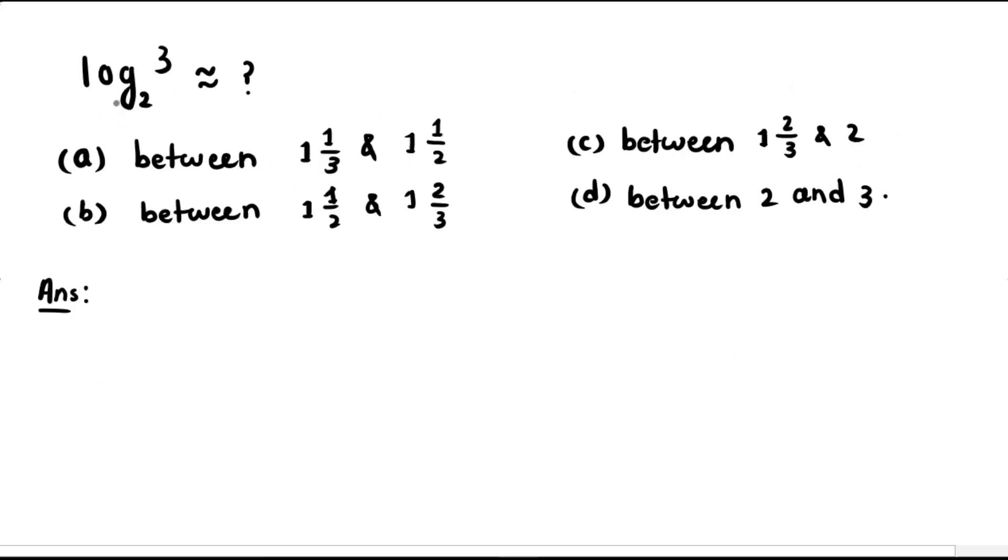So how can we solve this problem? Let's assume our given expression, that is log₂(3), is equal to x. By the rules of logarithms, this means 2^x = 3.